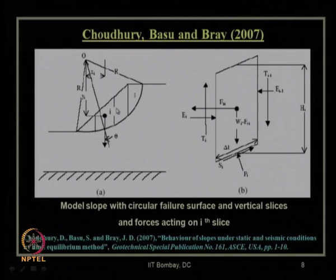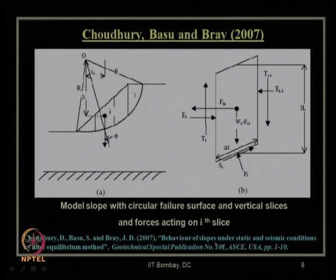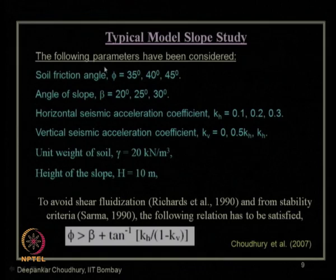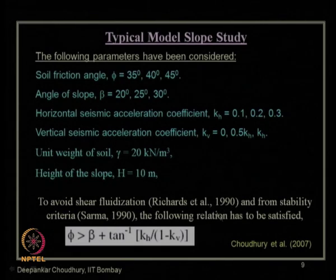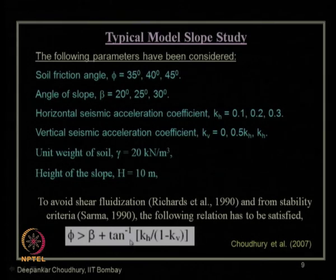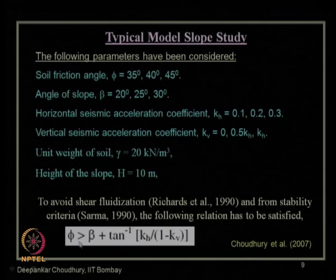Then we discussed how to estimate the factor of safety of a finite soil slope using the vertical slice method and the pseudo-static approach of seismic acceleration, available in ASCE's Geotechnical Special Publication by Chaudhury, Basu, and Bray. We also learned that a phenomenon called shear fluidization can occur even in dry cohesionless soil, as mentioned by Richards et al. For that stability criterion, phi value should be greater than tan inverse of k_h divided by (1 minus k_v).